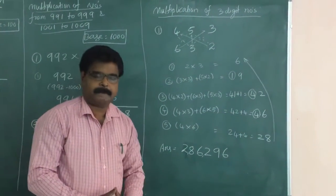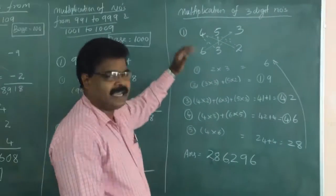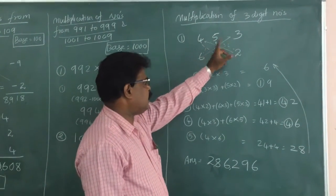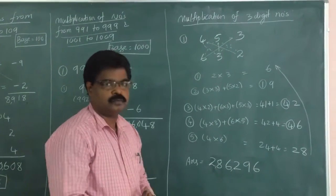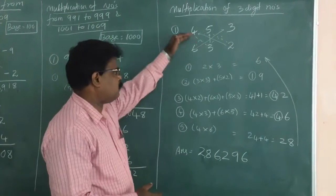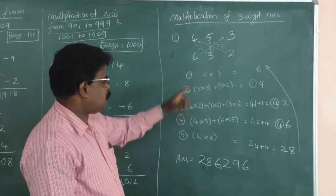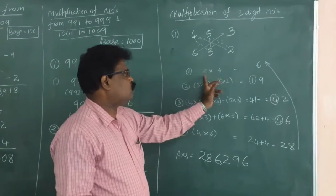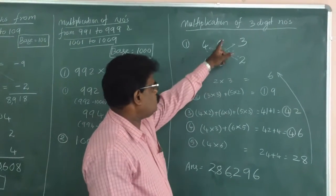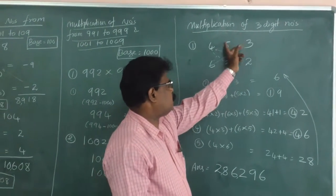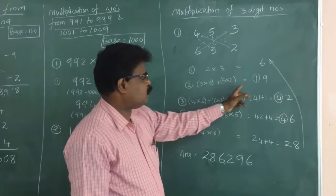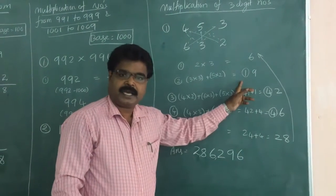Next: multiplication of a 3-digit number. Taking the example 453 into 632. Step one: multiply the units digits — 2 into 3 equals 6. Step two: cross-multiply and add — 5 into 2 plus 3 into 3 equals 19. Here 1 is a carry.